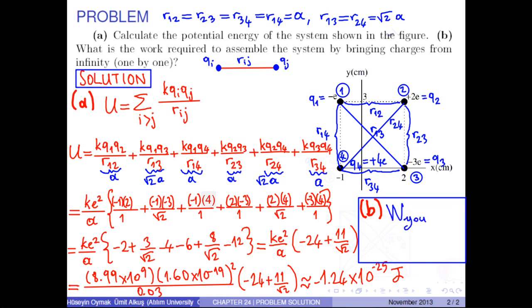the work to assemble the system by bringing charges from infinity one by one is equal to the potential energy of the system. That is approximately negative 1.24 times 10 to negative 25 joules.